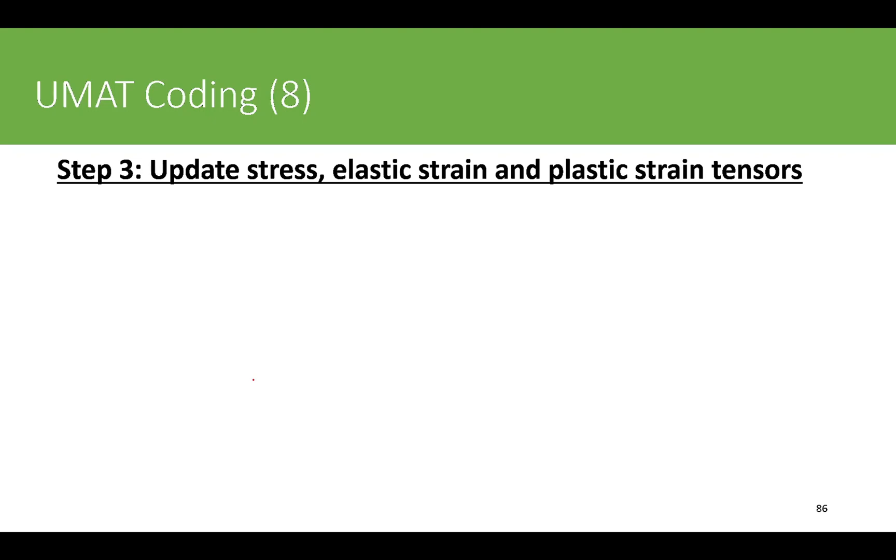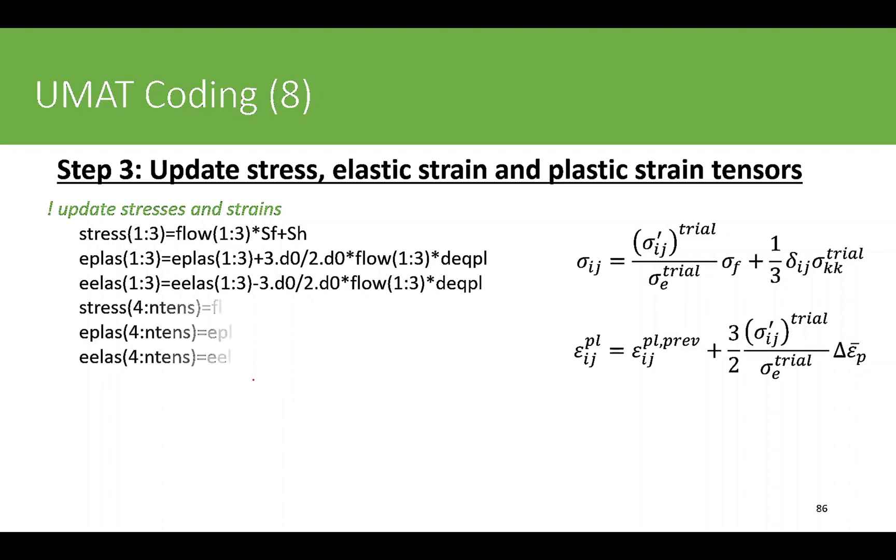Once we have found the increment of equivalent plastic strain using Newton's method, we update the stresses, elastic strains, and plastic strain tensor using this relationship. It's the same process, so nothing has been changed here except the sigma_f rather than sigma_y. Finally, update the accumulated equivalent plastic strain by adding the newly found increment of equivalent plastic strain.